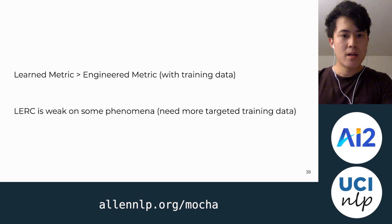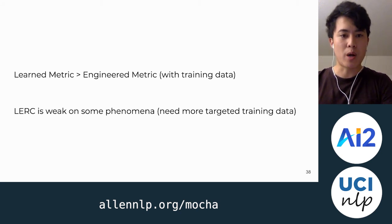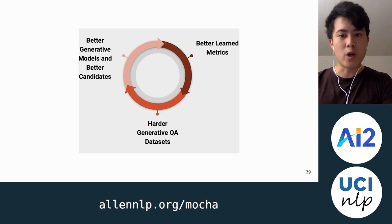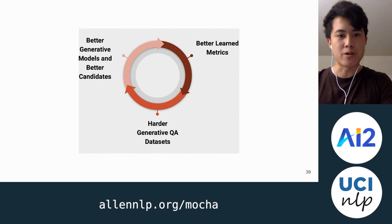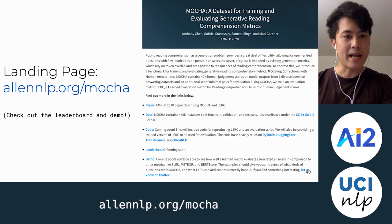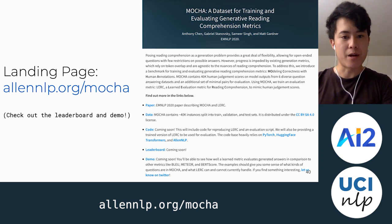Some concluding thoughts: given training data for the domain or task you want to evaluate on, a learned metric is probably preferable to an engineered one. But that's not to say a learned metric is perfect — LURC is weak on some phenomena as shown in our error analysis, and we plan to get more targeted training data to patch up these flaws. We hope that MOCA and LURC will allow better, harder generative QA datasets to be created, which will in turn allow better generative models and candidates, improving LURC further. We have a landing page at lmnlp.org/moca, with a leaderboard for evaluating evaluation metrics and a demo where you can interact with LURC and other existing metrics. Thanks for listening.